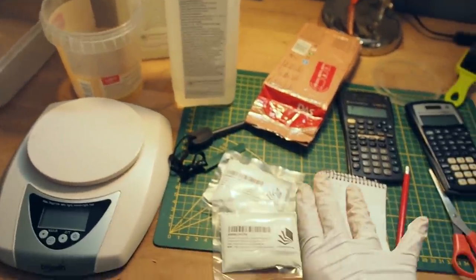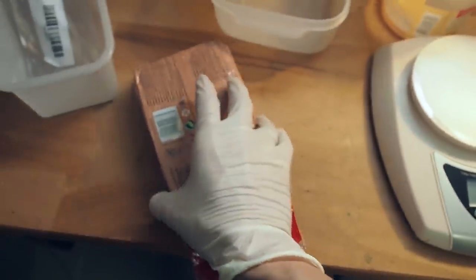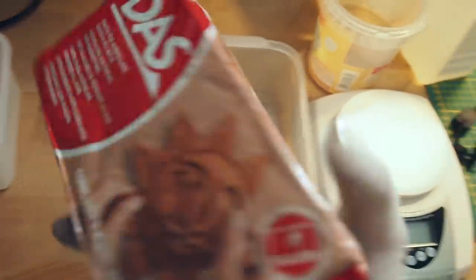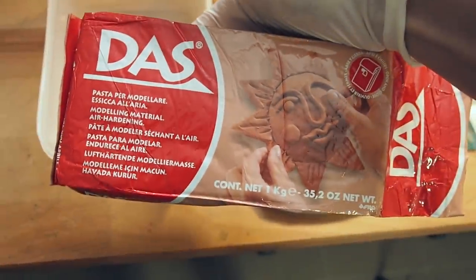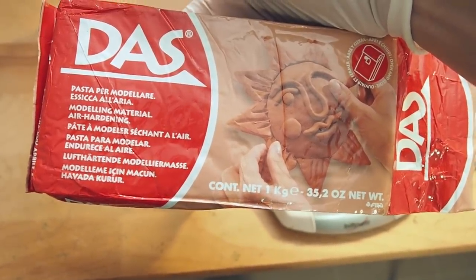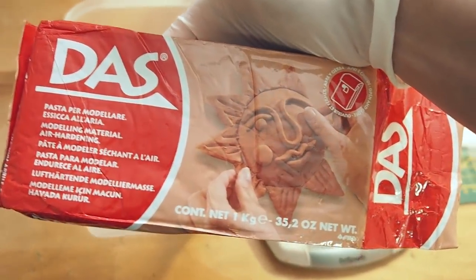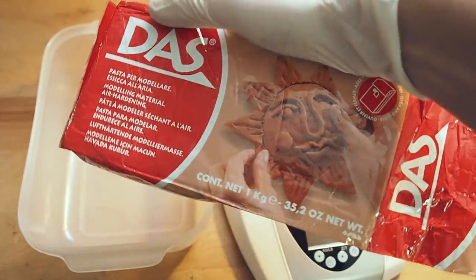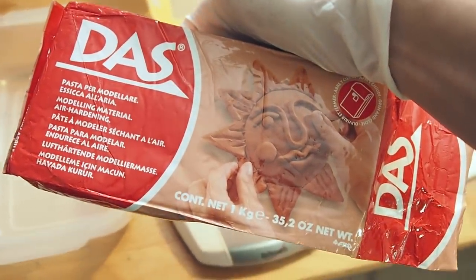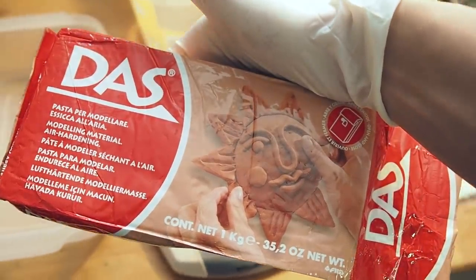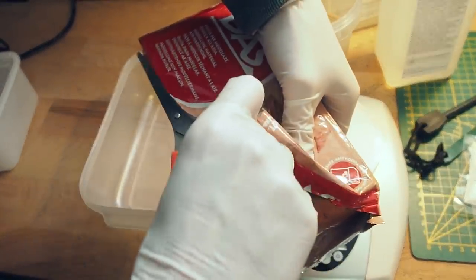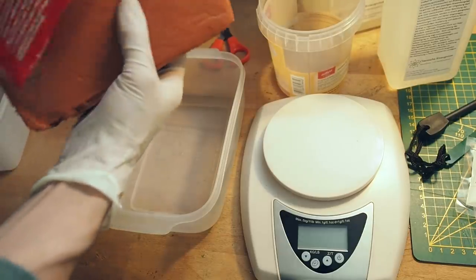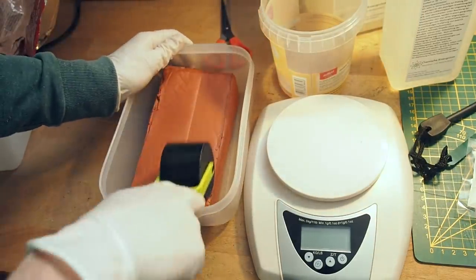Now before I mix the epoxy resin together I first want to create a small mold and for this I have this small container and I have this here which is some kind of modeling material and this was pretty much the only thing that I had at home. Maybe it's better to use something out of plastic so this will harden out but I just want to give it a try and see if I can use this or not. Okay so I try to make this as flat as possible.